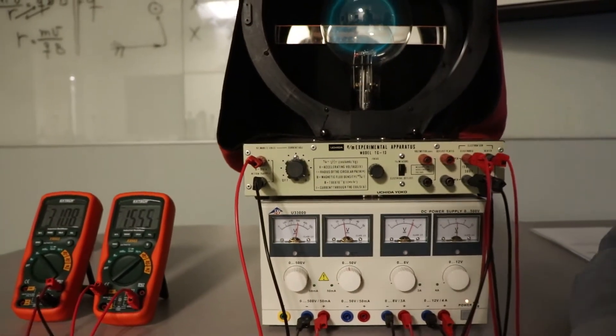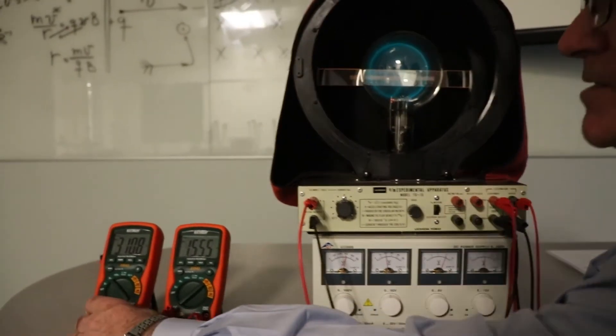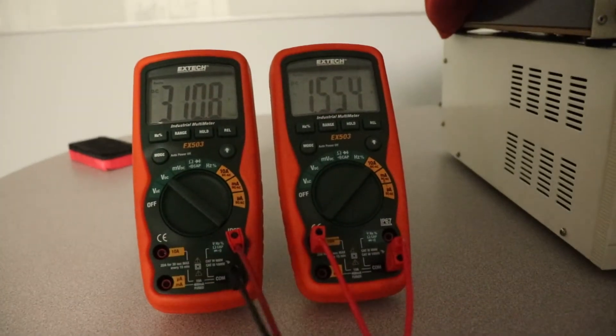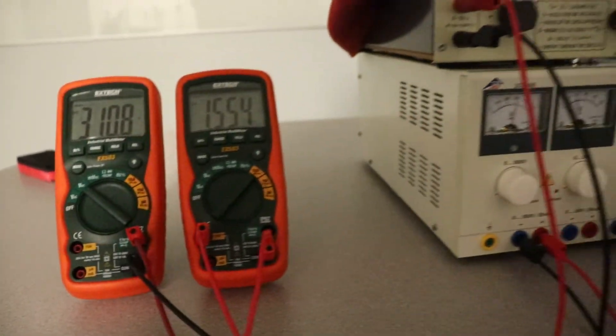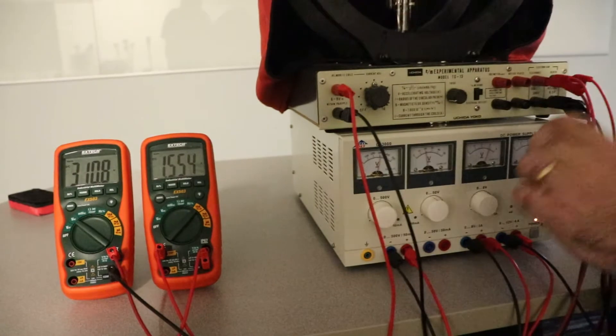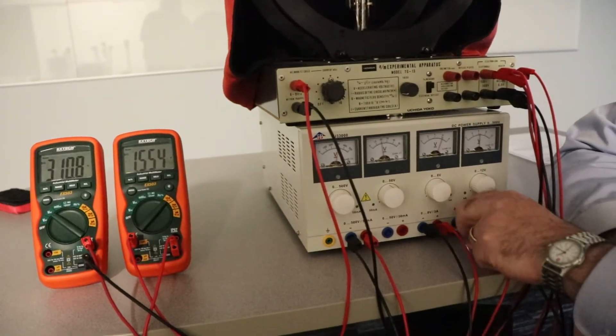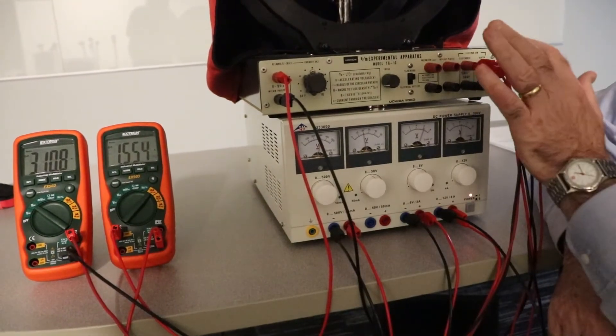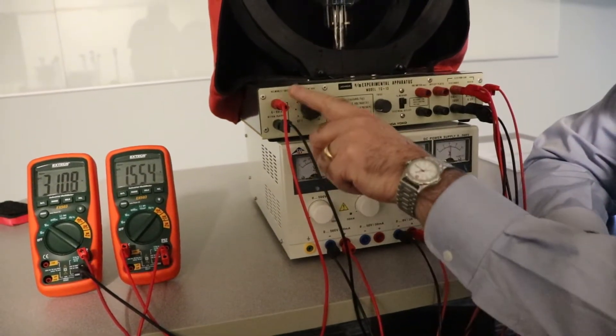Now, I want to keep track of the current. So right here, I got 3.108 amps coming from the supply for the B-field. So right here, this is the B-field. And so I got it going through the ammeter and then going to the Helmholtz coil right here.